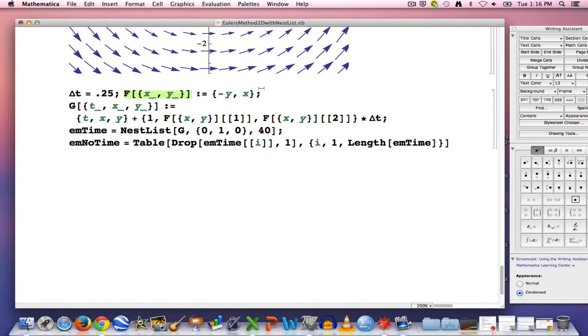If you had a different vector field, for example, if it was dy dt equals x plus 2y, and go back to the first one, if it was dx dt equals negative y plus x squared, you could make a change like that to implement Euler's method in this situation.